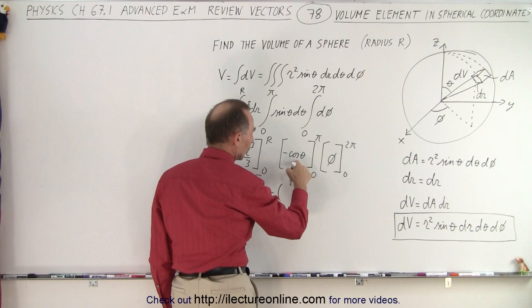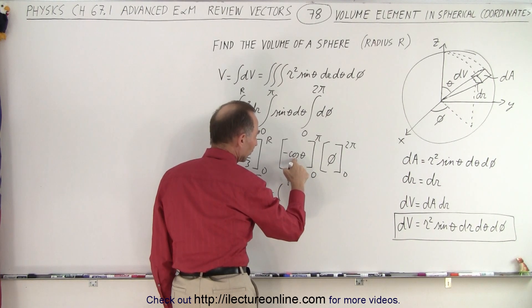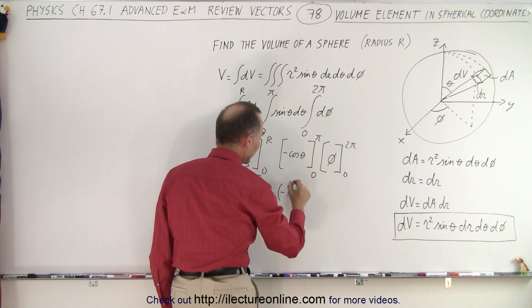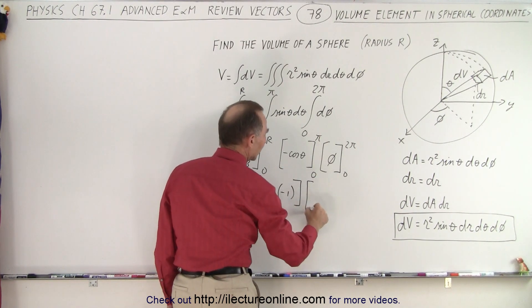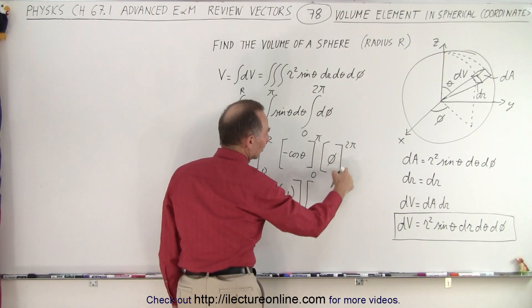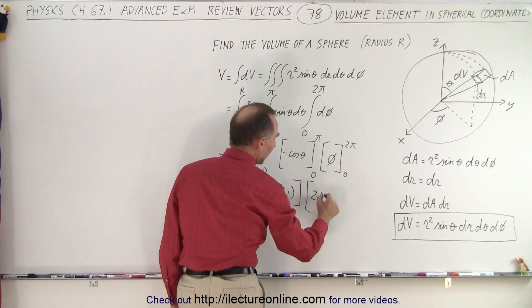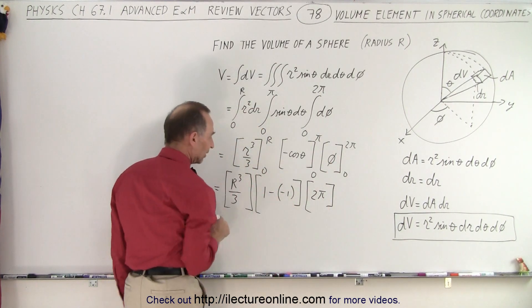Minus when we plug in the lower limit minus the cosine of zero is one. So that's minus and minus one. And then we multiply the times. When we plug in the lower limit we get zero. Plug in the upper limit we get two pi.